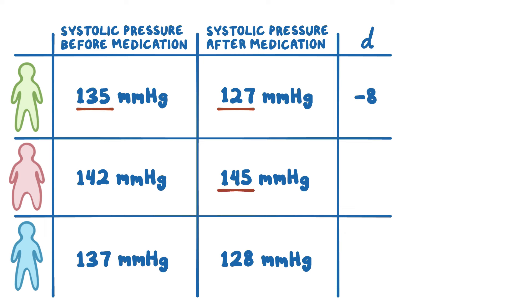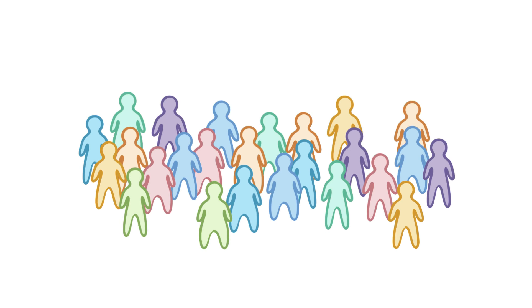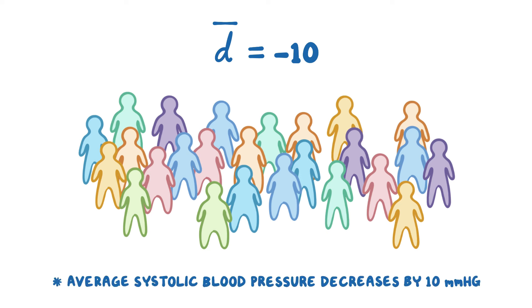For person 2, it's 145 minus 142, or plus 3. For person 3, it's 128 minus 137, or minus 9. To find the mean of the differences, we add up all the individual differences and divide by the number of people in the group. For just the first three people, it would be minus 8 plus plus 3 plus minus 9, divided by 3, so minus 4.7. To save time, let's assume that for all 25 people in the study the mean of the differences was minus 10, meaning that on average systolic blood pressure decreases by 10 mmHg after using the medication.